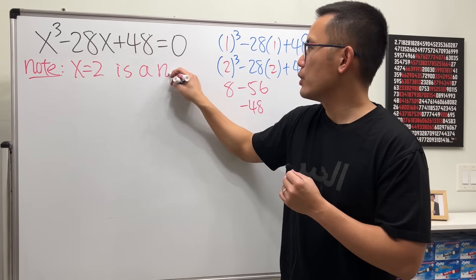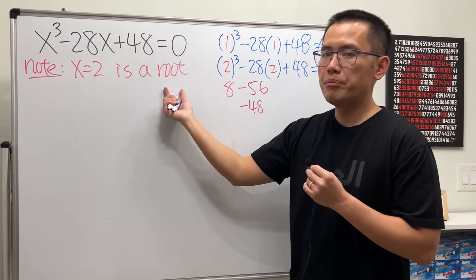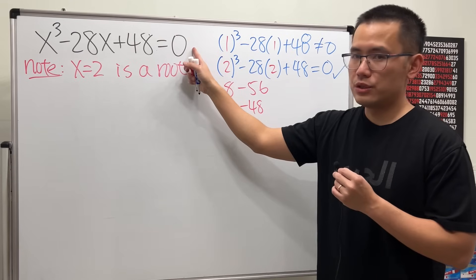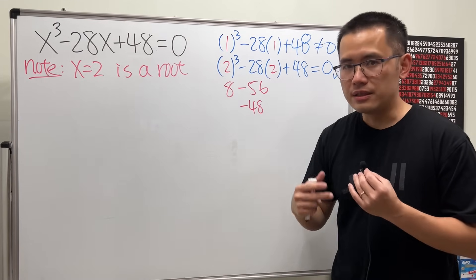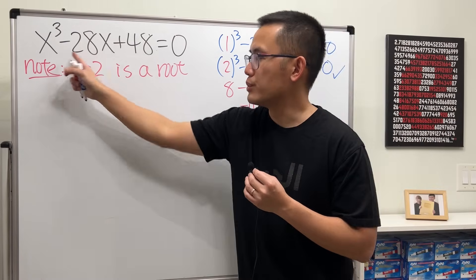So once we know an answer, I will just note that x equals 2 is a root. Sometimes you may also hear the term zero, meaning you're plugging this number into all the x's and you end up with zero.